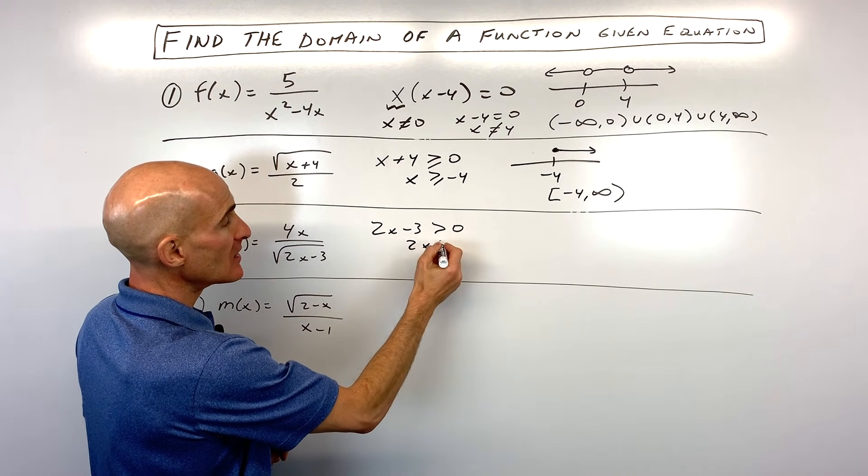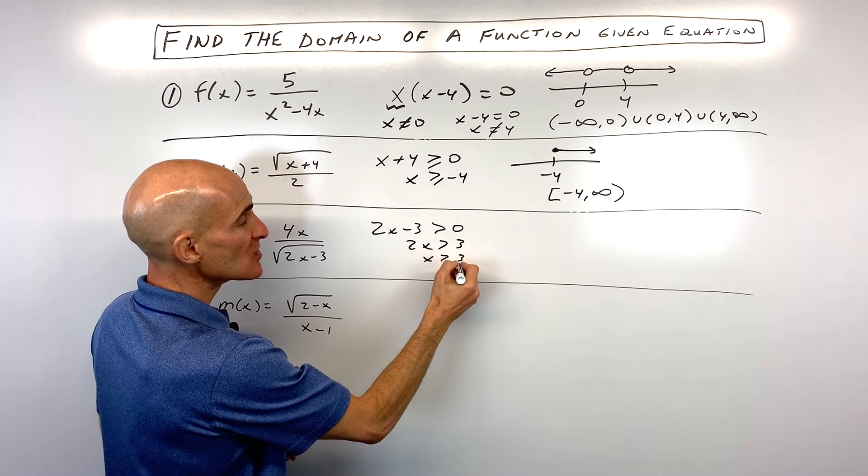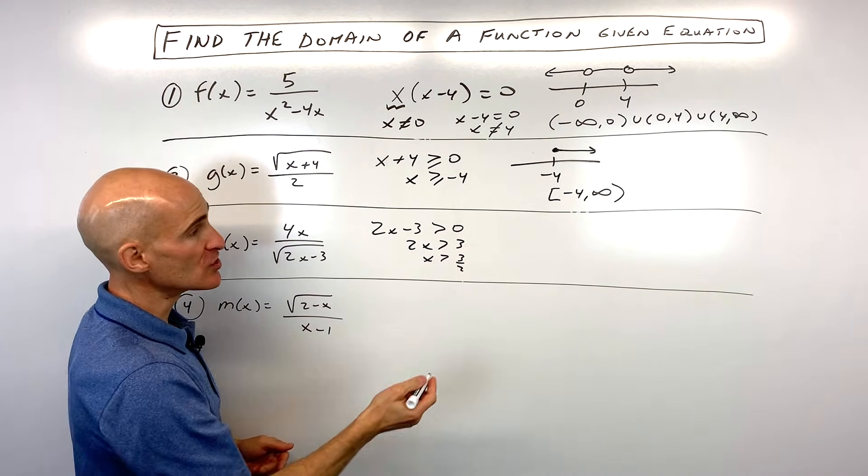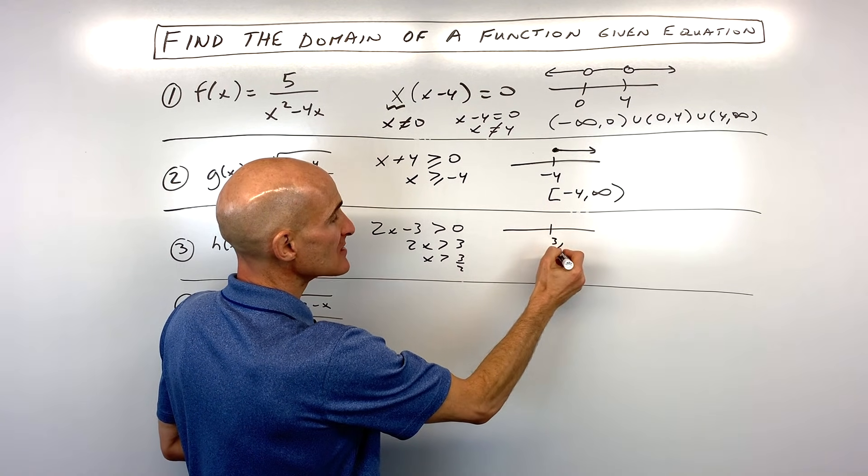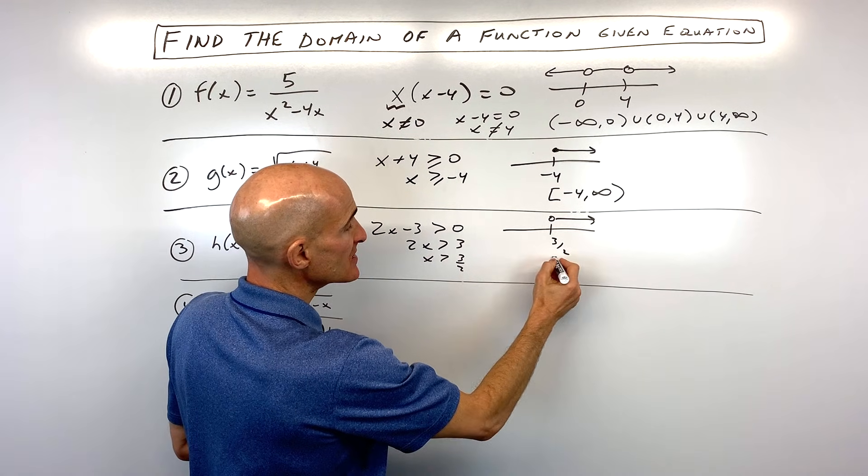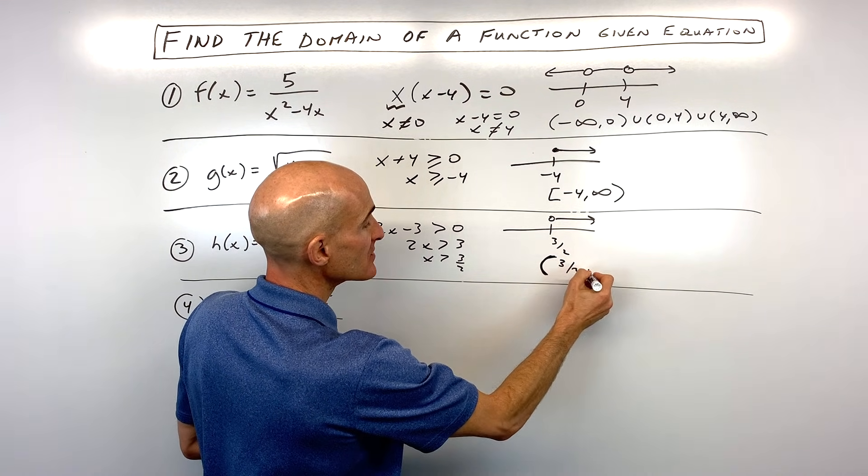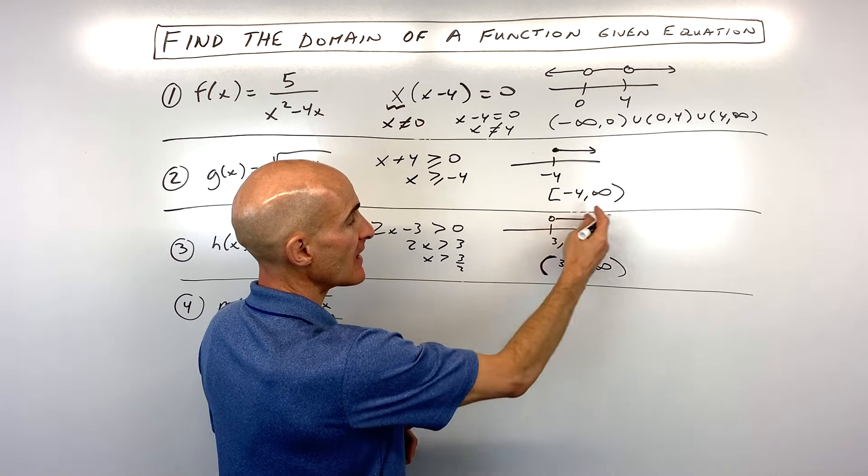So let's solve this inequality by adding three to both sides. Let's divide both sides by two. So you can see x has to be greater than three over two. Again, I like to just graph this on the number line so I can kind of think about working from left to right. So we can see that it's parentheses, three halves to infinity. That's our domain.